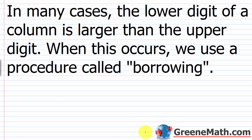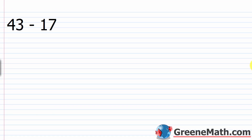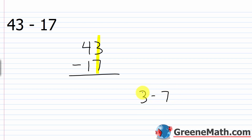The examples we've looked at so far are not very challenging — they're actually very simple. But in the next few examples, we're going to see some things that will challenge us a little bit. In many cases, the lower digit of a column is larger than the upper digit. When this occurs, we use a procedure called borrowing. Let's look at 43 minus 17. Start the problem as usual: 43 on top, minus 17 on the bottom. When we try to subtract in the ones column, we see that 3 is smaller than 7, so we have a problem doing 3 minus 7.